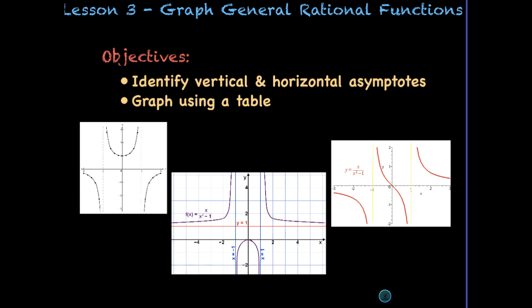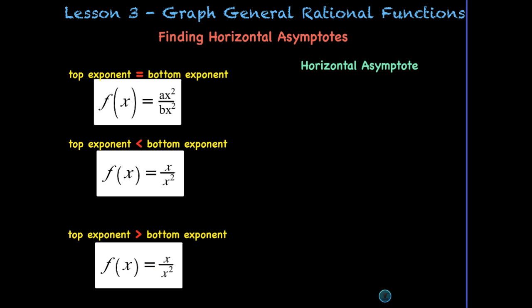Let's look at the difference between general and simple rational functions. We're still going to find vertical asymptotes the same way by looking at the denominator. Whatever makes the denominator equal zero cannot be in our function — that would be undefined — and those would be the asymptotes.